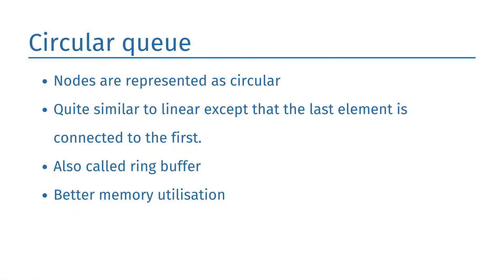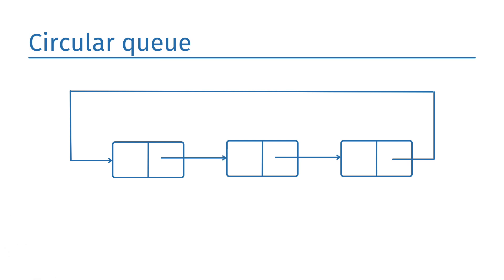In the circular queue, all the nodes are represented in a circular form. It is similar to the linear queue except that the last element of the queue is connected to the first element. It is also known as a ring buffer as all ends are connected to one another. The circular queue overcomes the drawback of the linear queue — if empty space is available, a new element can be added by simply incrementing the value of rear. The main advantage of using the circular queue is better memory utilization.